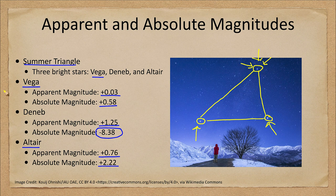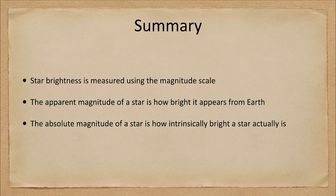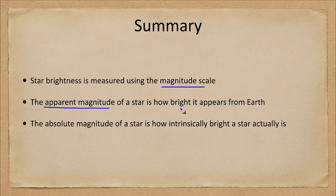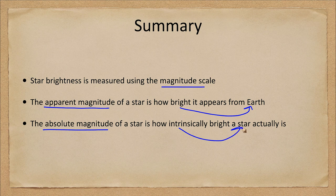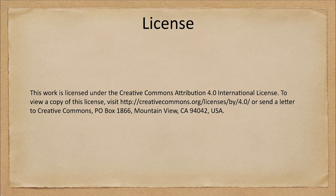To summarize: star brightness is measured using the magnitude scale. Apparent magnitude is how bright a star appears from Earth, while absolute magnitude reflects its true intrinsic brightness. We used comparisons of the Summer Triangle stars to see how apparent and absolute magnitudes help us learn more about stars. That concludes this special topic — we'll be back next week for another special topic in astronomy. Have a great day everyone, and I will see you in class.